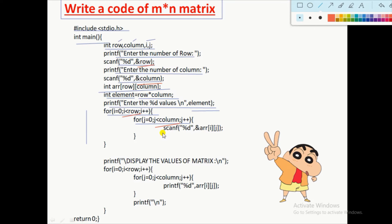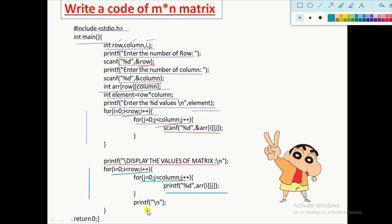Then we print a message to display the values of this matrix. We similarly use a nested for loop to print all the values — one loop for row and another for column — then print %d array[i][j]. These two loops iterate and print all values from start to end. After completing every column, we jump to the next line using printf('\n') to print the values of the next row. Finally, we use the return 0 statement. I hope you understand how to write the M cross N matrix.